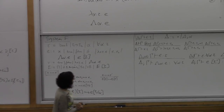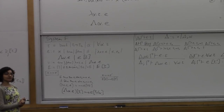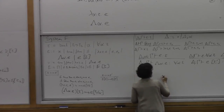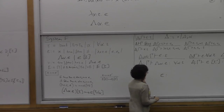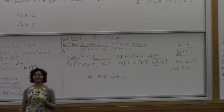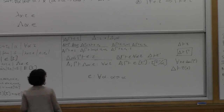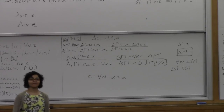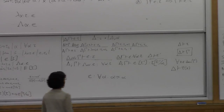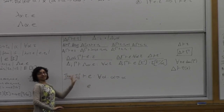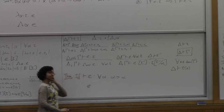Now let's talk about interesting properties of System F. If e has type for all alpha, (alpha arrow alpha) — our favorite example for polymorphic types — what can we say about the behavior of this term? It must be the identity function. We talked about this on the first day: if e is a closed term...